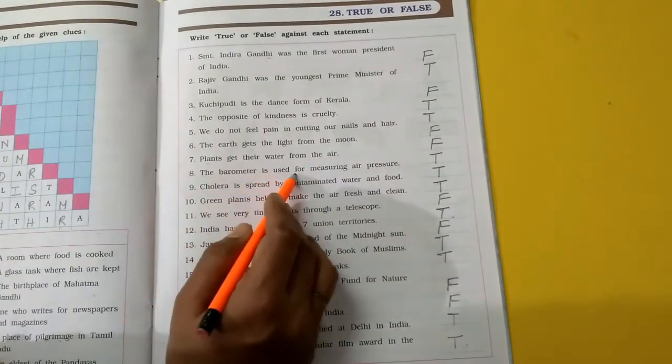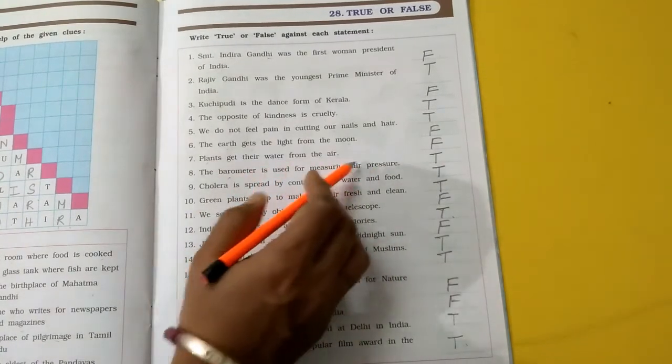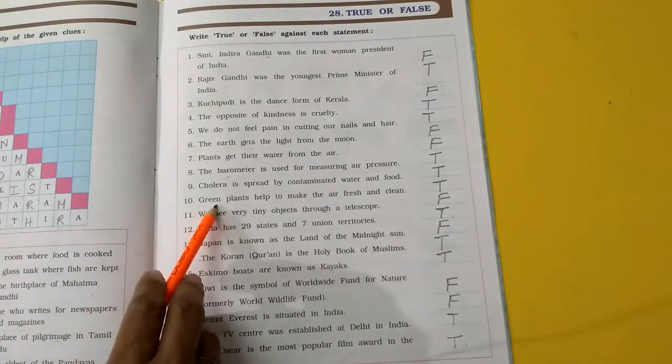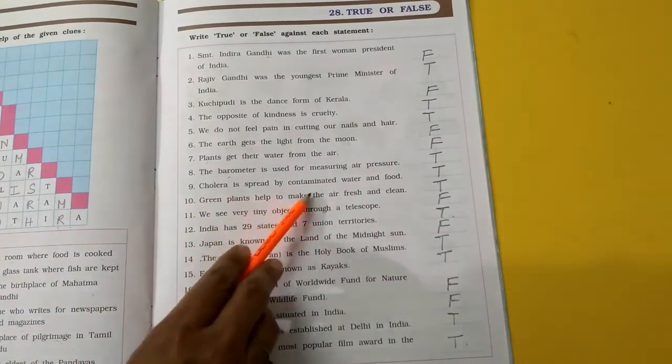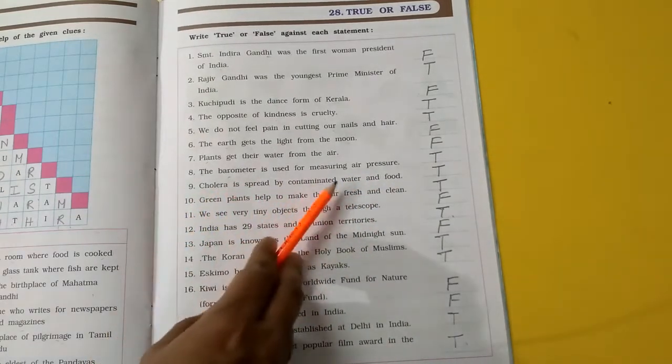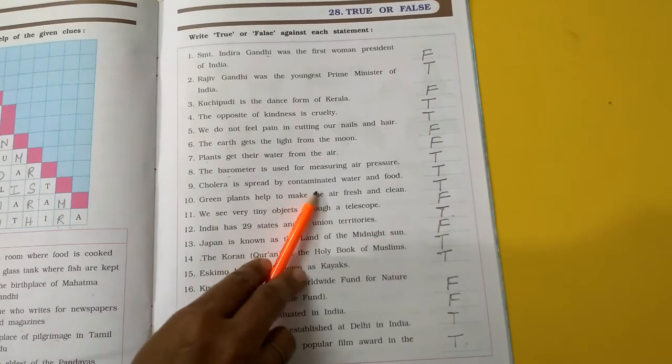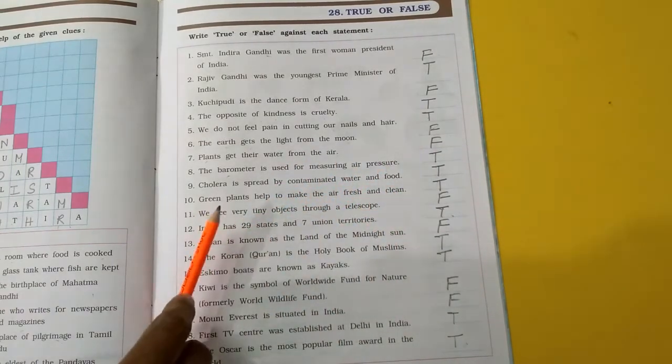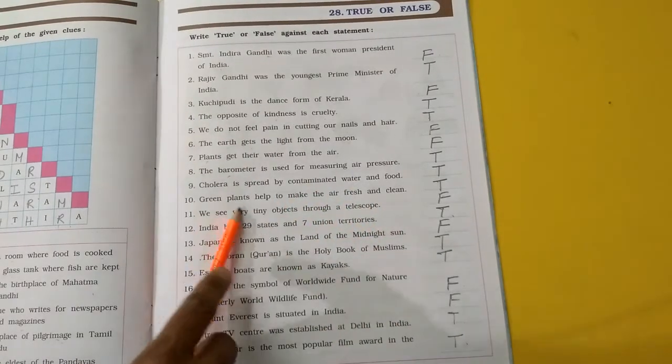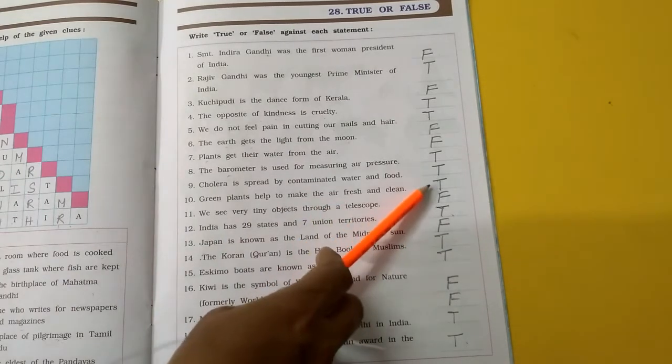The barometer is used for measuring air pressure. Barometer air pressure ko maapne ke liye use hota hai. True. Cholera is spread by contaminated water and food. Cholera water aur food contaminate ki wajah se hota hai. True. Green plants help to make the air fresh and clean. Green plants wo hawa ko shudh aur saaf rakhte hain. True.